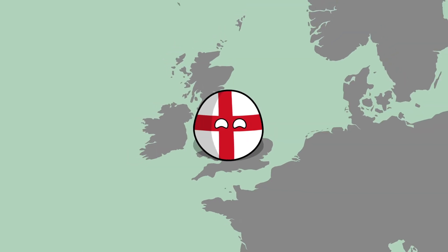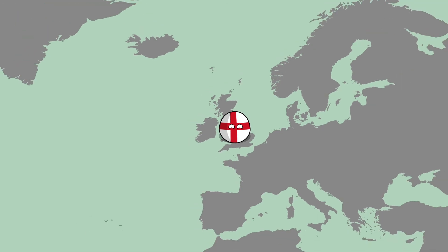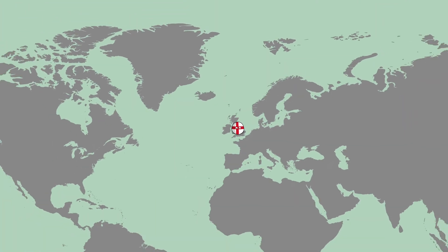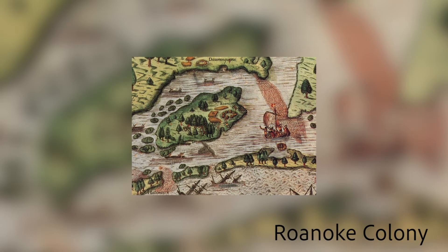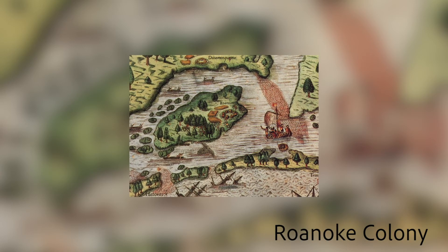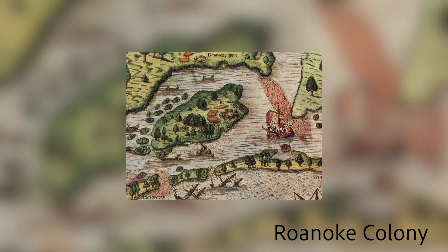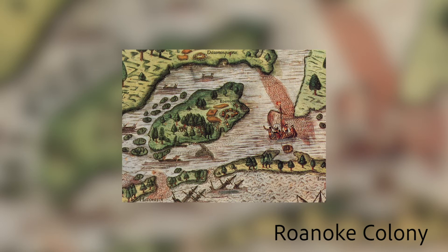Finally, and perhaps overlooked in an English context, the Tudor period saw the beginnings of English colonial expansion with the encouraging of privateering in West Africa and the New World, led by figures such as Sir Francis Drake. This, coupled with the attempted establishment of Roanoke Colony in North America and the increasing English influence over Ireland in this period, adds to Tudor England's global significance.